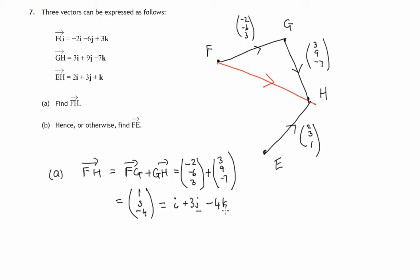So that's journey from F to H. Hence, or otherwise, find F to E. So again, let's look at the diagram to help us out. This time we're traveling from F to E, and it would appear that we could go this time from F to H followed by H to E.